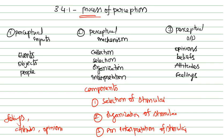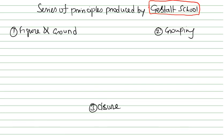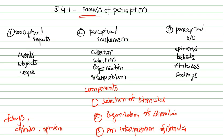The next component is organizing of the stimuli. In organizing the stimuli, there is a topic called the Gestalt school, which provides a series of principles. Let me just finish this: the series of organization of stimuli — how they are done, how the stimulus is being organized — relates to these principles, which I will elaborate on shortly.